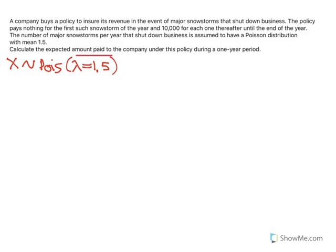So the expected amount paid, that's important, so we just need to know the different values that can be paid and the probability of those happening. So let's think about it. We can pay 0, and that happens with probability that there's either 0 or 1 snowstorm, but that will get multiplied by 0 in our expected value, so we don't really even have to worry about that.